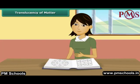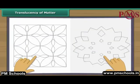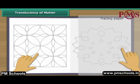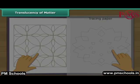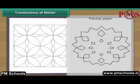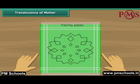Rekha is getting ready to embroider a handkerchief. She has located a pattern in a book and wants the same on her handkerchief. She uses a tracing paper to copy the pattern from the book onto her hanky. Now she is all set to embroider. What made this embroidery possible was the translucent tracing paper.